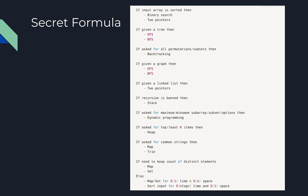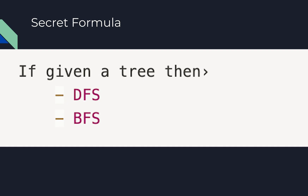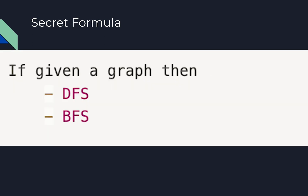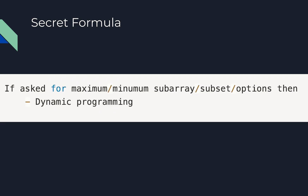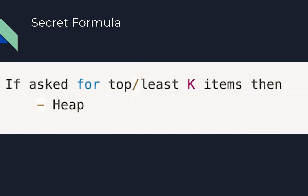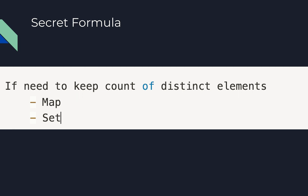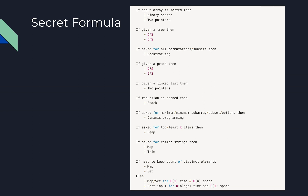Here's a formula I use that helps with a lot of these LeetCode problems. If the array is sorted, then use binary search or two pointers. If a tree is given, use DFS or BFS. If you're asked for all permutations or subsets of anything, use backtracking. If you're given a graph, use DFS or BFS. If you're given a linked list, use two pointers. If recursion is banned, use a stack. If you're asked for the maximum or minimum of some subarray, use dynamic programming. If you're asked for the top or least k items, use a heap. If you're asked for common strings, use a map or a trie. If you need to keep count of distinct elements, use a map or a set. Otherwise, you can probably go with a map or set, and also try sorting the array and going back to the first rule.